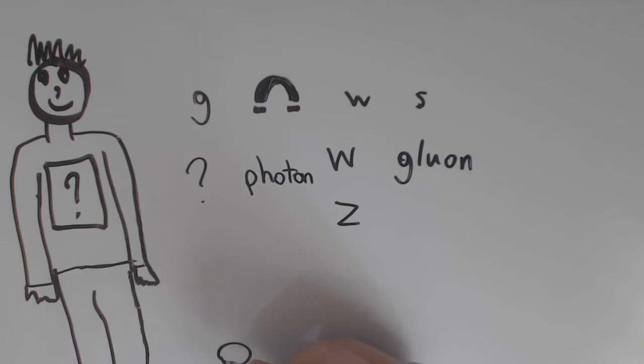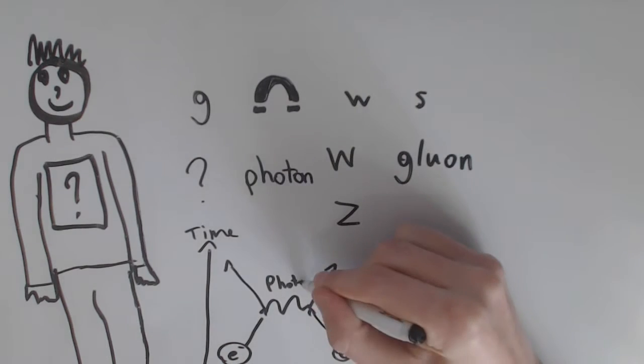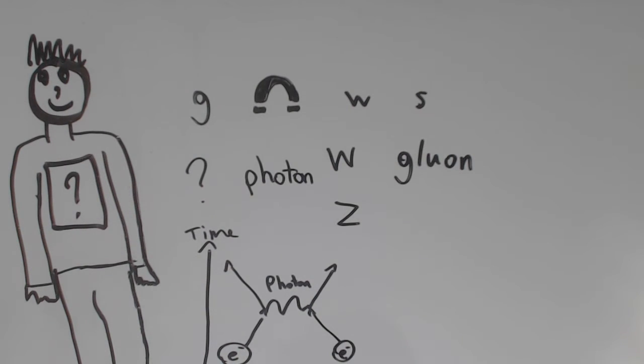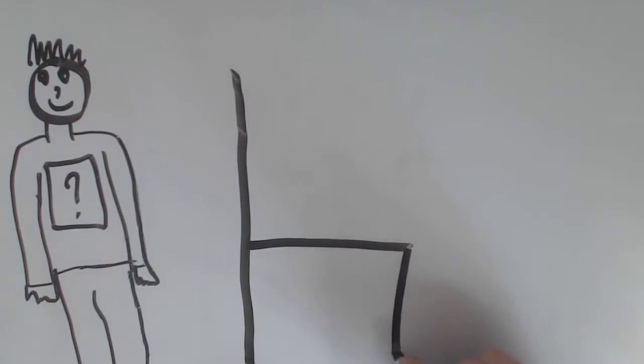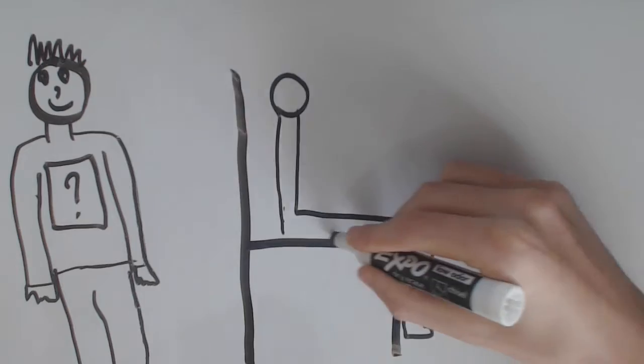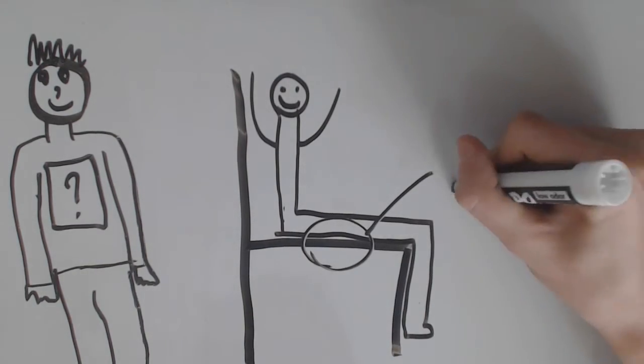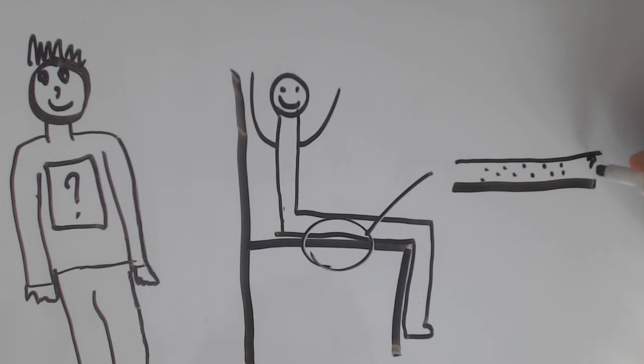These four bosons are exchanged between leptons and quarks during interactions, changing their velocity and or properties. An example of an interaction is when you touch something. When you're sitting on a chair, the atoms of your pants aren't actually touching the atoms of the chair. There's a repulsion force being exerted between the atoms. Well, actually, between the electrons. Since they're both negatively charged, they push on each other, which prevents us from falling through the chair.